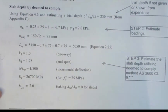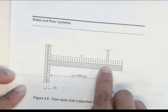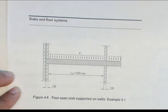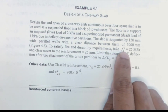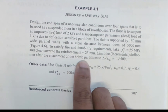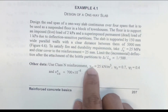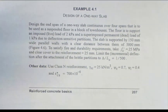Figure 4.6 shows the slabs we need to design. They have dead load and live load, with 150 millimeter wide supports. We are designing this n-span slab. To satisfy fire and durability requirements, take concrete compressive strength of 25 megapascals, clear cover to reinforcement of 25 millimeters, and limit incremental deflection after attachment of brittle partitions to delta over L of 1/500, using Class N reinforcement. The density of reinforced concrete is 25 kilonewtons per meter cubed.